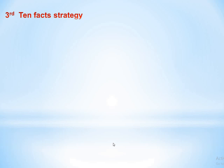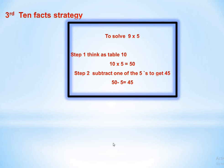The third strategy is the ten fact strategy. It is very easy. Step one: think of table 10 — change 9 into 10. For example, 5 times 9 becomes 10 times 5, which equals 50. Step two: subtract one group of the other factor. So 50 minus 5 gives 45. If the product is 20, subtract 2; if it's 70, subtract 7, and so on.